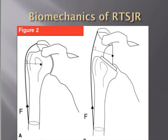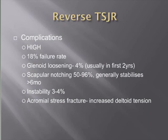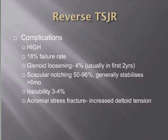However, reverse total shoulder is not without significant complications. The general figure is that 18% fail: 4% of glenoids become loose, usually evident in the first two years; there is a high incidence of scapular notching, generally within the first six months but stabilising thereafter; instability is seen in 3-4% of patients; and there is an incidence of acromial stress fractures from the increased deltoid tension, where the loaded deltoid can cause stress failure through the acromion just proximal to the deltoid insertion.